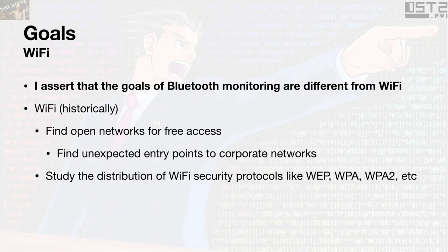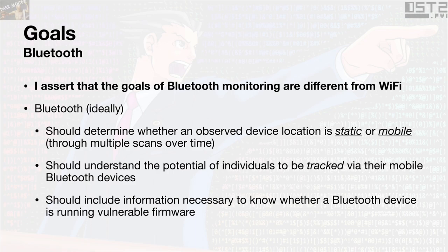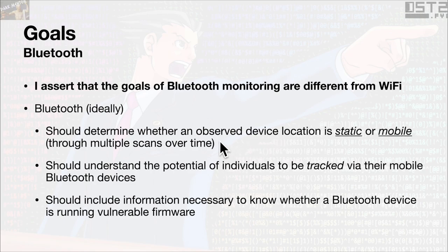Let's talk about the differences in the goals of Bluetooth monitoring versus Wi-Fi. Historically Wi-Fi was mostly about finding open networks for free internet access, finding unexpected entry points into corporate networks, or researching the distribution of increasingly secure protocols — starting with WEP and moving into more secure things. Bluetooth monitoring is fundamentally different. For Bluetooth, the type of things we should try to determine are whether a given device is static or mobile. If you scan it multiple times, is it always in the same location, or is it moving around with someone — like a watch, fitness tracker, or a car?